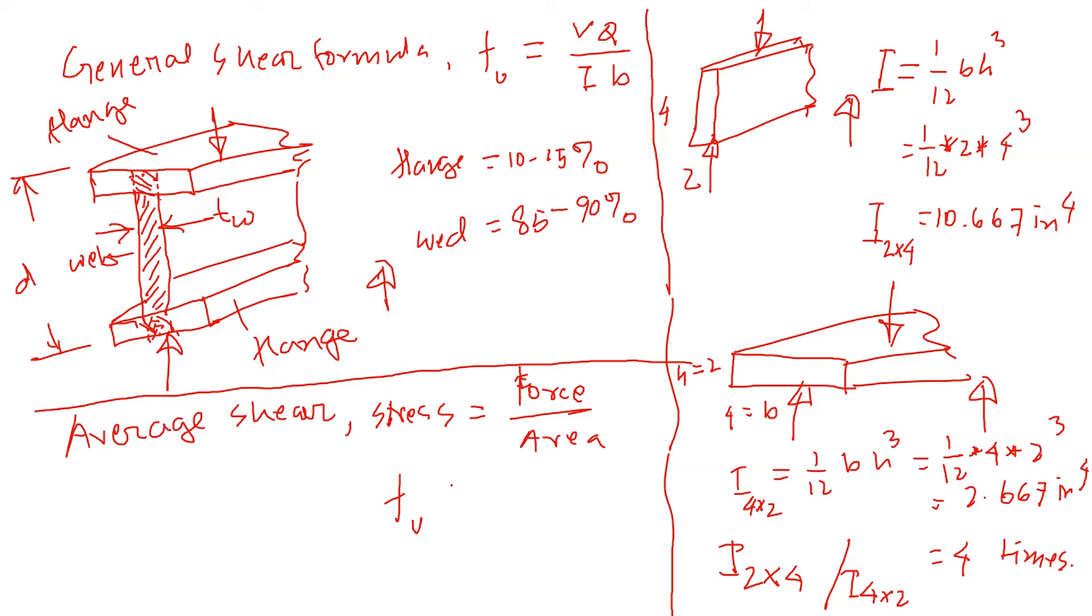So, here, shear stress, vertical shear stress is expressed by FV, and then force, shear force is expressed by V. And if we calculate the area, cross-section area, so you can see the depth is a rectangle with depth D height, and then T thickness. So, we can just simply write FV equals V over D times TW, TW is the thickness, web thickness, and D is the depth. So, we could use this formula to calculate.